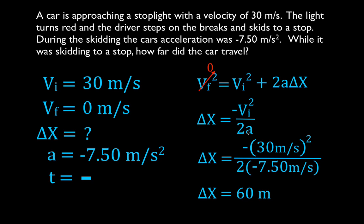If you follow these steps, you can do these problems with no problem. Step 1: write down the five variables. Step 2: fill in what you know and what you don't know. Step 3: get out your kinematic equations, look for an equation that has what you're solving for and for which you know the other three variables. Then plug the values in and get the correct answer with units.